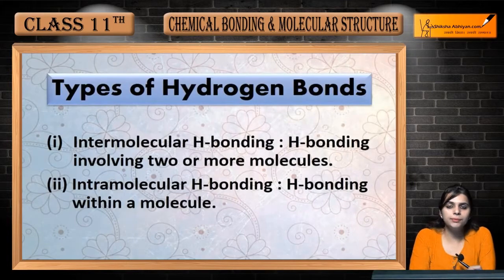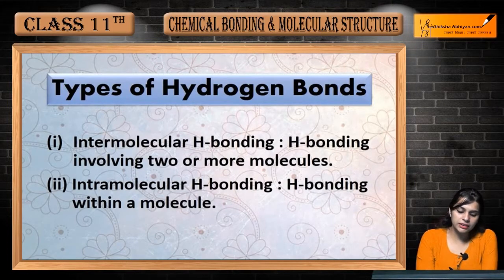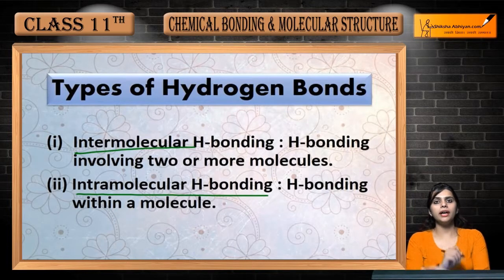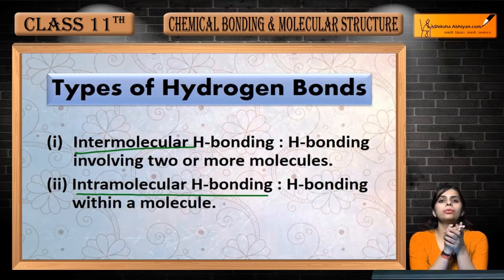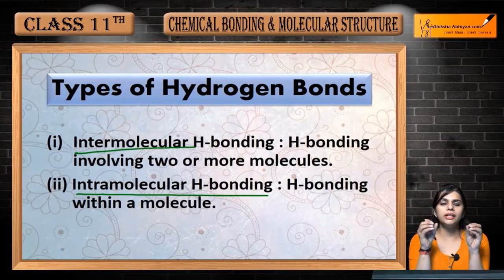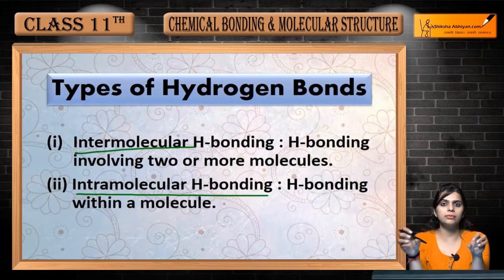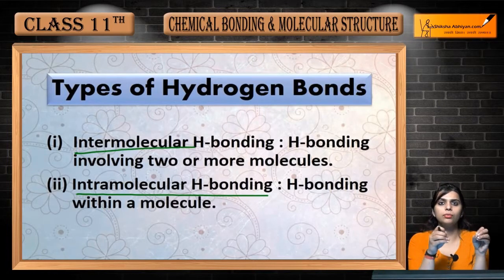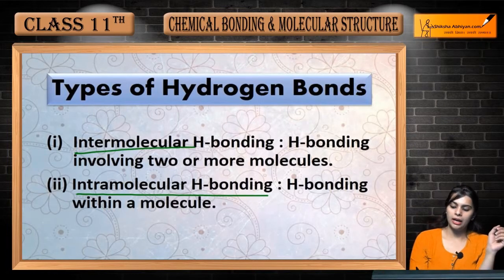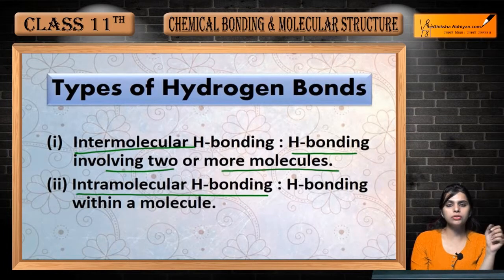Next are the types of hydrogen bonding. There are two types: intermolecular and intramolecular. Intermolecular — 'inter' means between two. Intermolecular hydrogen bonding exists between any two or more molecules.